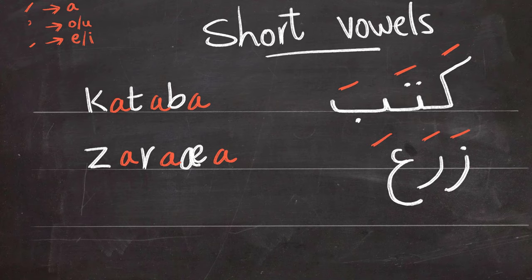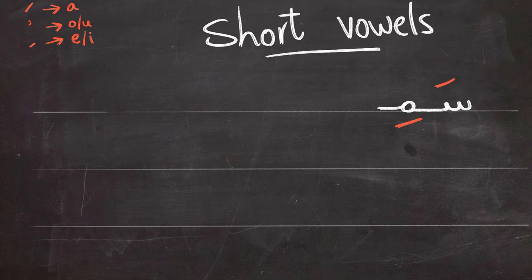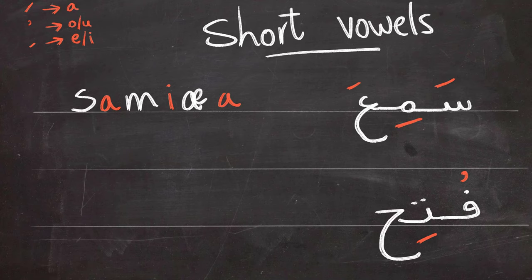Sometimes we have different short vowels in the same word. Like this example we have seen, meem, ain. But these are just the consonants. Let's add the vowels. It will be sami'a. Another example we have fa, ta, ha. When we add the vowels then we have the proper word it will be fatha.